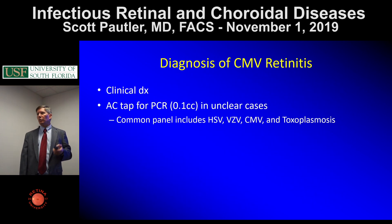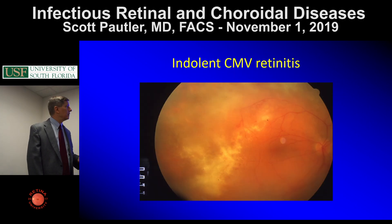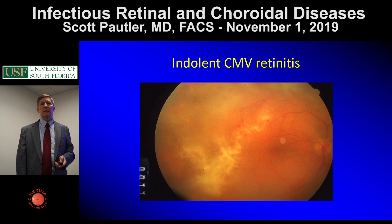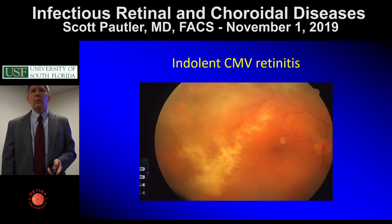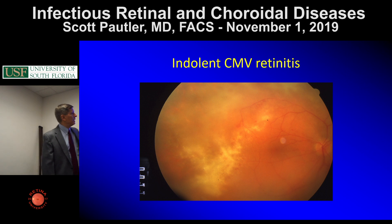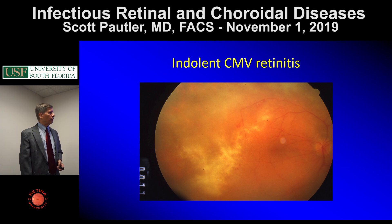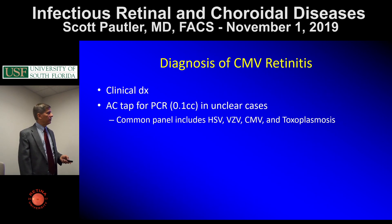CMV retinitis is a clinical diagnosis. You look in, you have a history to say this person likely has CMV. With the indolent category, the retinitis can march toward the posterior pole, though there's not a clear anatomical reason why it would start in the periphery and march posteriorly. In cases where you're not sure, you can get an anterior chamber tap for PCR.